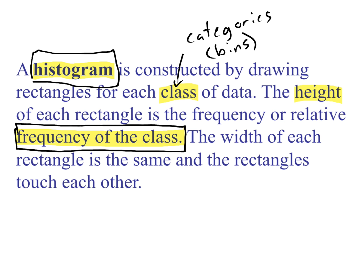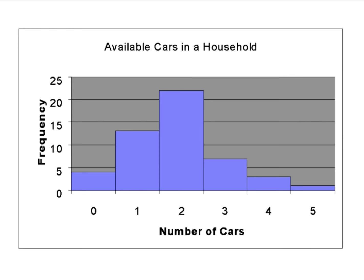That's what a histogram looks like. Let's just look at a real simple one right now with that same distribution for the number of cars per household data.